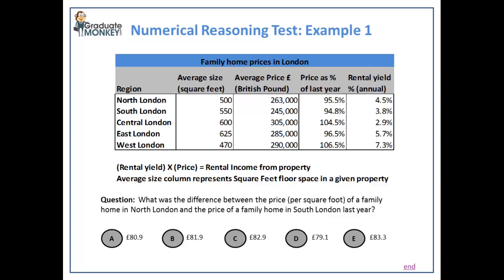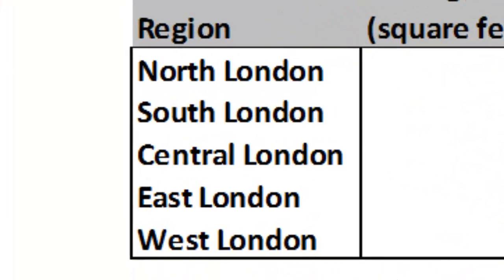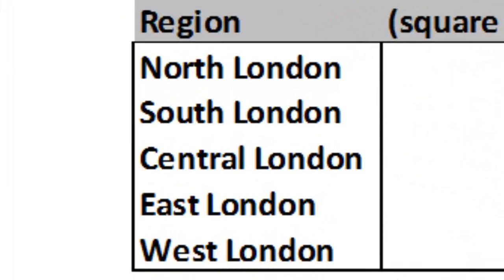First, focus on the data table at the top. It features statistics about average family home prices in London. The data is broken down by several criteria. The rows in the first column represent regions such as North, South, Central, etc.